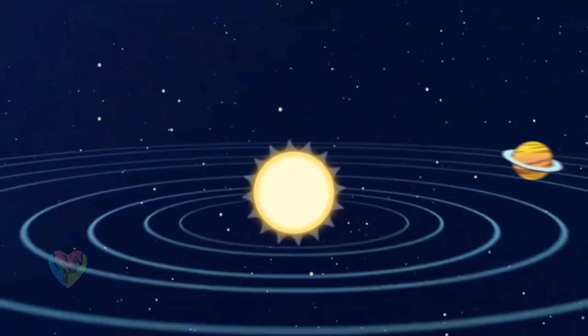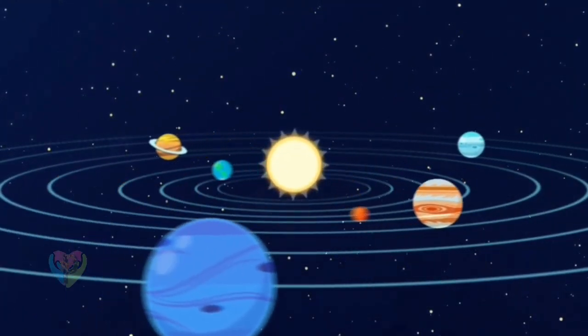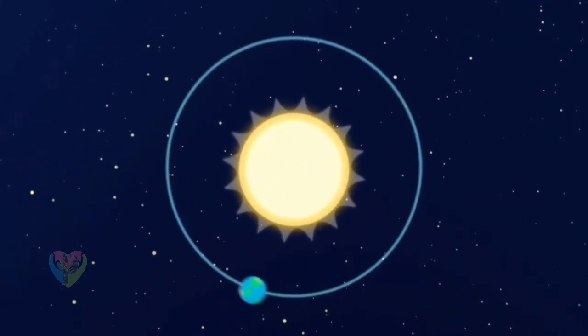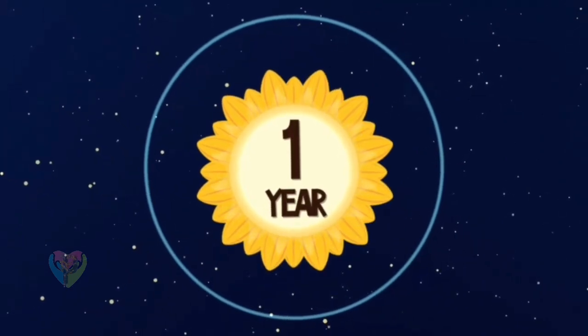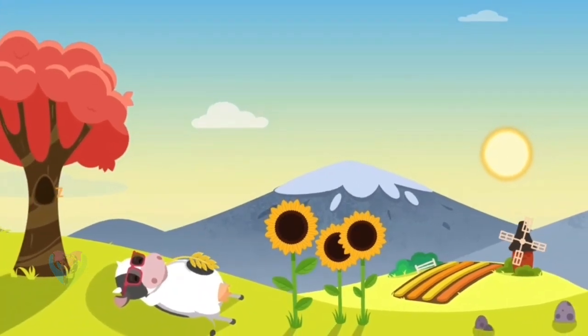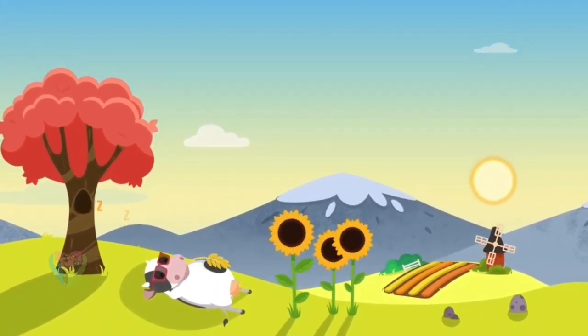Because it's so heavy, the Sun is pulling on all of the planets and is making them rotate around it. It takes our planet 365 days to make a full circle—that's one year. The Sun is the main source of energy for all life on Earth and we wouldn't be here without it.